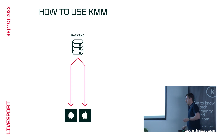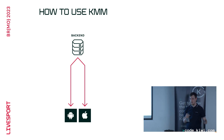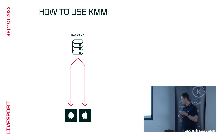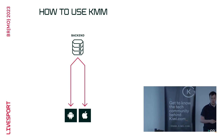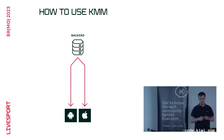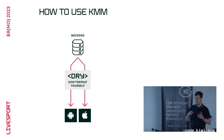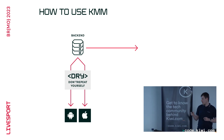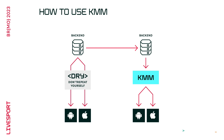This is the current state most mobile developers know: you have a backend and two applications, and you need to write all the code twice. Wouldn't it be better to write it once and use it twice? That's exactly what we do with KMM — Kotlin Multiplatform Mobile. I'll be using KMM and Kotlin Multiplatform interchangeably throughout.